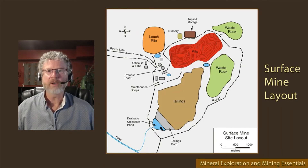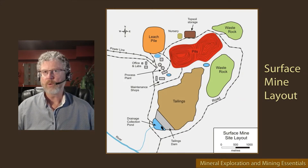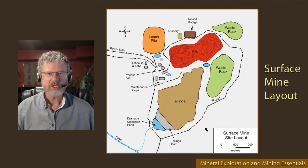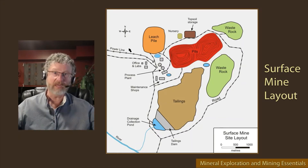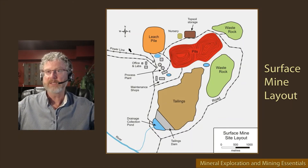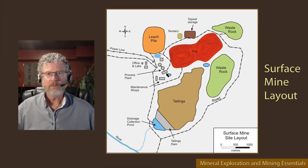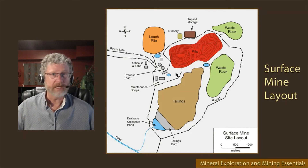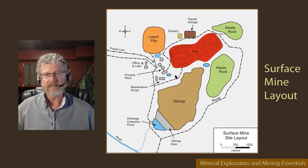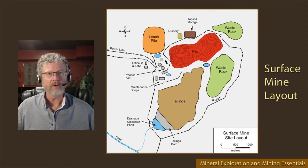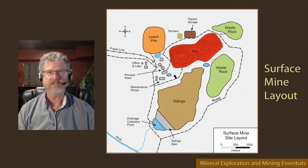Water collection ponds and water management are really important at a mine site. Ditching is installed all the way around the mine site to redirect any surface water away so it doesn't flow over the site, because any water that does fall within the mine site needs to be collected and treated if necessary — even if that's just letting dust and silt settle out. Any seepage from the base of tailings or waste rock also has to be collected and treated before release to the environment.